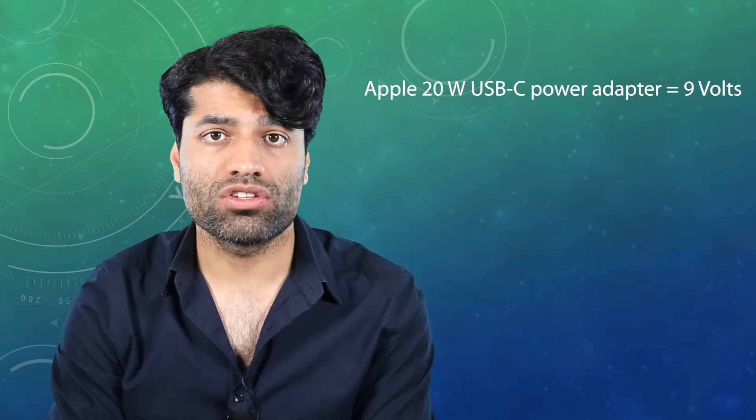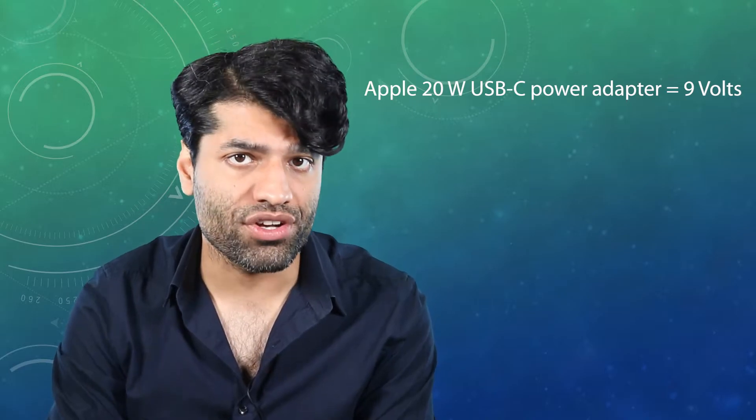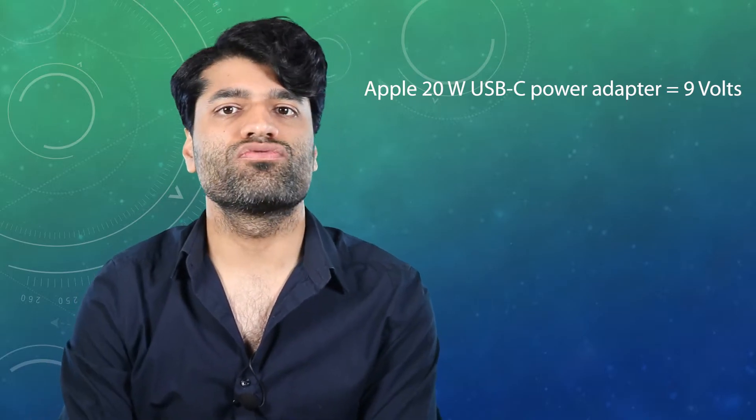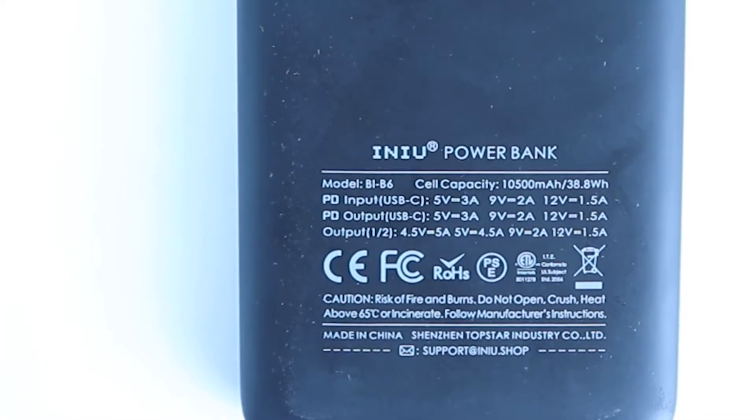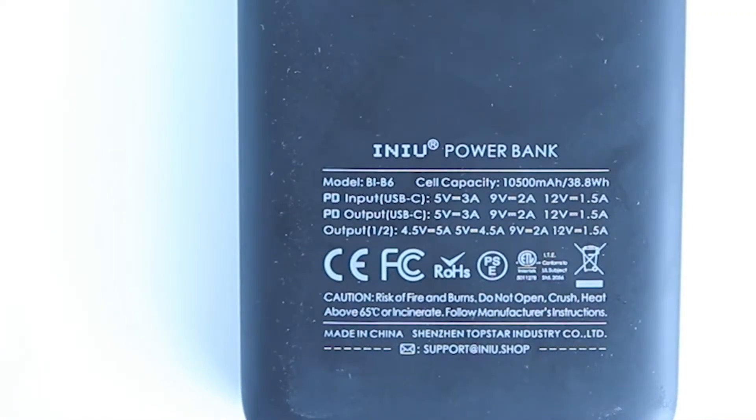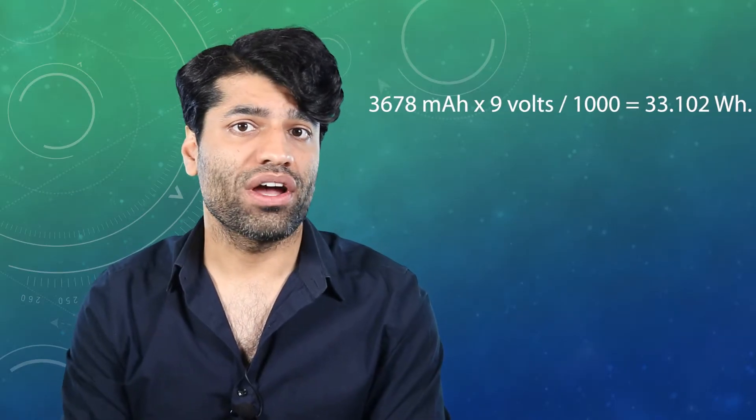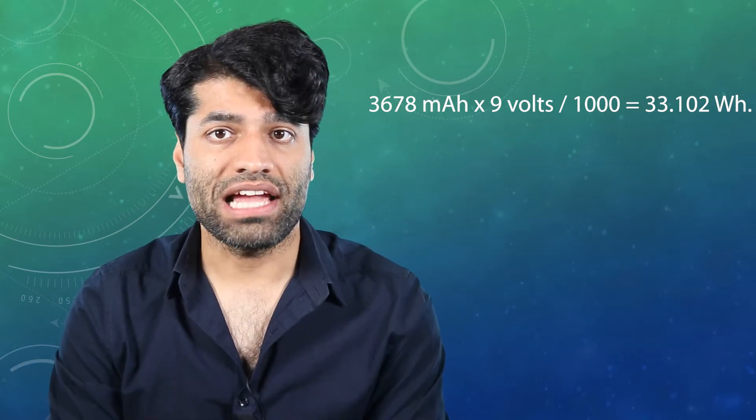If we use an Apple 20 watts USB-C power adapter then it gives you an output voltage of nine volts. Therefore if your power bank could match the output voltage of nine volts at two amps, then by multiplying 3700 milli amp hour by nine volts and dividing it by thousand you get 33.1 watts hour.